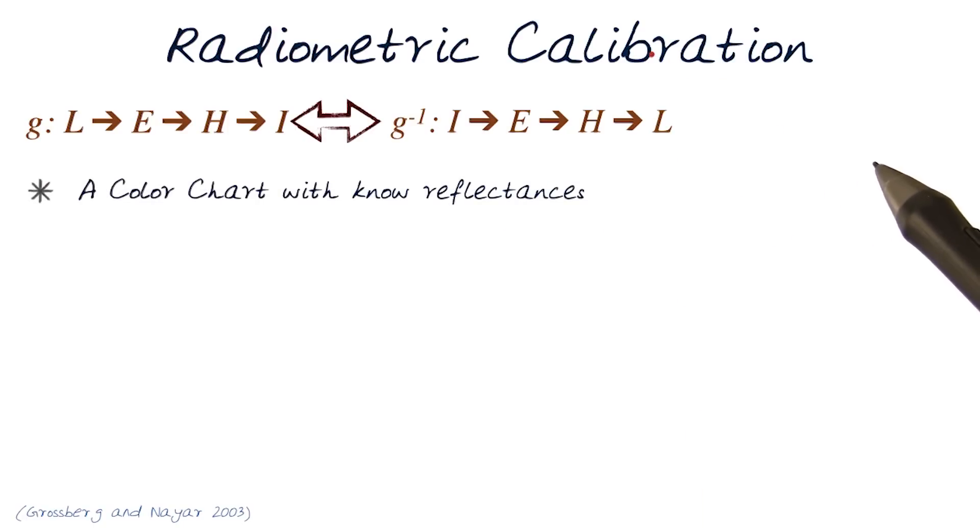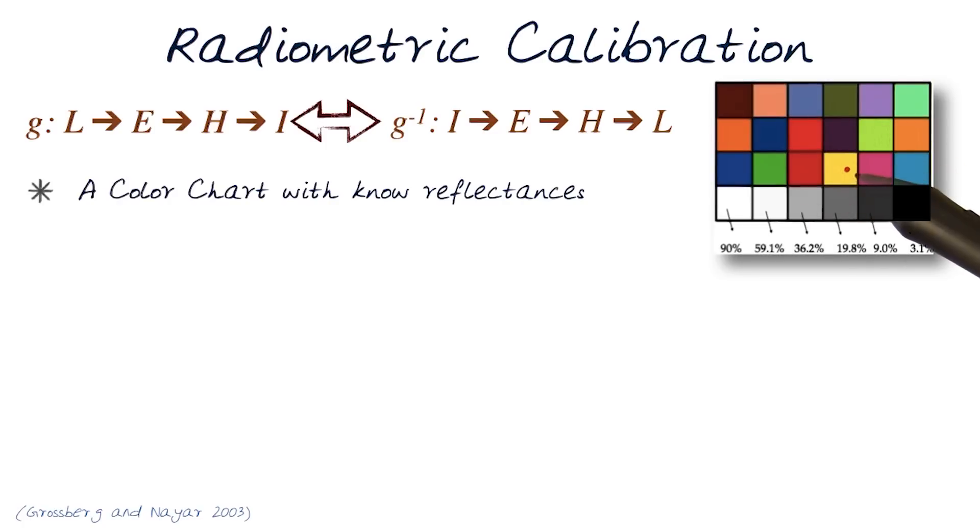Let's start off with a color chart that we know the reflectances of. A color chart like this comes in predefined, and here I'm showing you the gray values. It shows what the intensities are, 90, 59.1%. So somebody sat down and calibrated this color chart as a perfect color model with grayscale values that we're interested in.